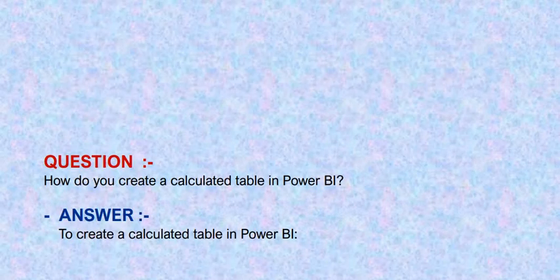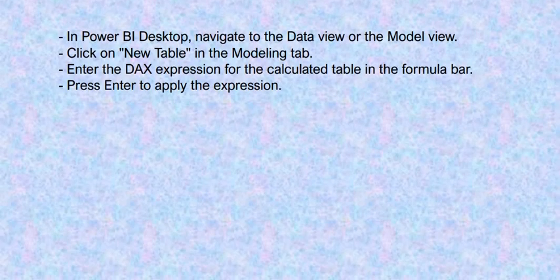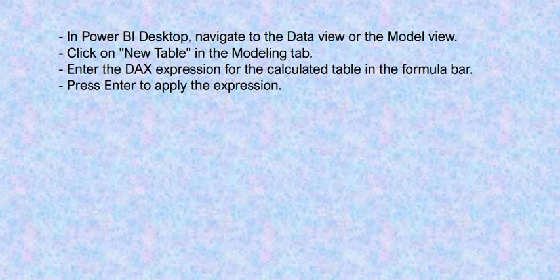Our next question is, how do you create a calculated table in Power BI? To create a calculated table in Power BI, in Power BI Desktop, navigate to the data view or the model view, click on new table in the modeling tab, enter the DAX expression for the calculated table in the formula bar, then press Enter to apply the expression.